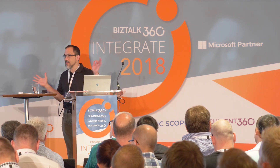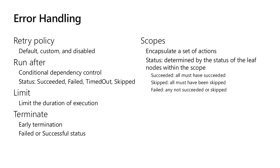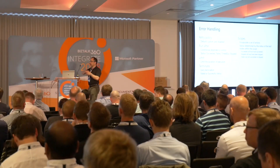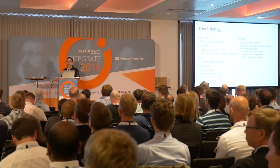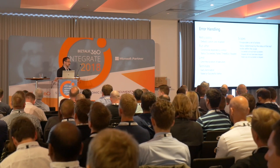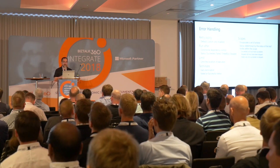Finally, there are scopes. Scopes give you the ability to have a collection of actions that run and then produce a single output status when complete. The scope's final status is based on the leaf nodes of all actions within it. A simple scope with one or two actions has one leaf node, but you can have sets of parallel actions — it essentially does a join across all those leaf nodes, with the result being an OR of all their statuses.